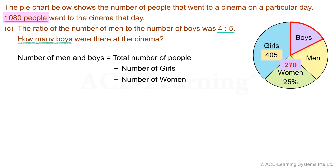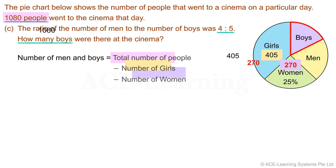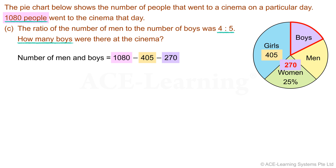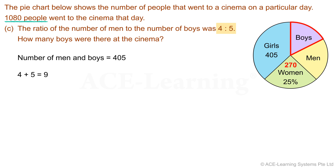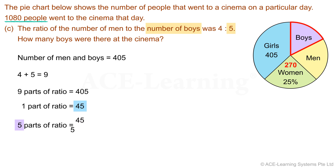Step 3: Carry out the plan. Number of men and boys = 1,080 − 405 − 270 = 405. Now applying the given ratio: the number of boys in the ratio is 9 parts, and 9 parts equals 405, so 1 part equals 405 ÷ 9 = 45. The number of boys is 5 parts, so 5 × 45 = 225.